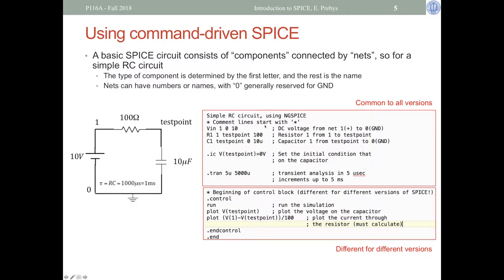Components are identified by the first letter: V for voltage source, R for resistor, C for capacitor, followed by a name. The voltage source goes from net 1 to net 0 — the positive point is listed first — with a 10-volt value. The resistors and capacitors follow in the direction of current, going from node 1 to test point at 100 ohms.